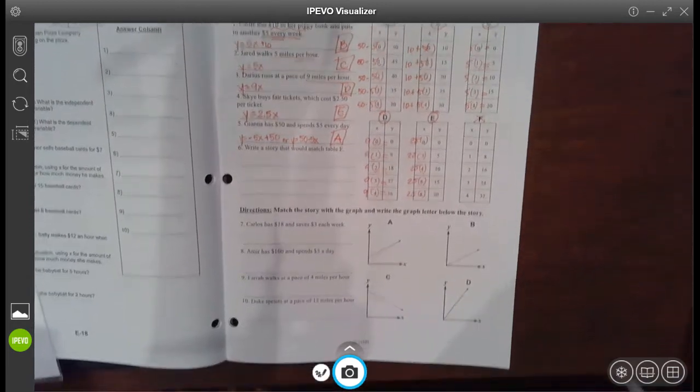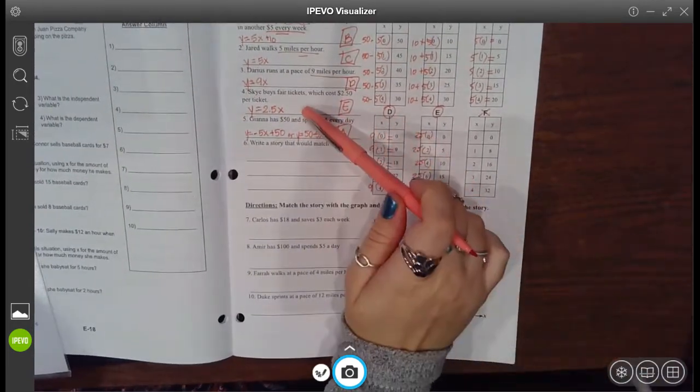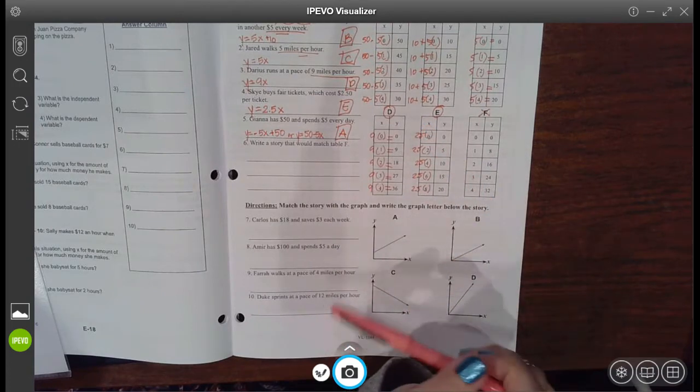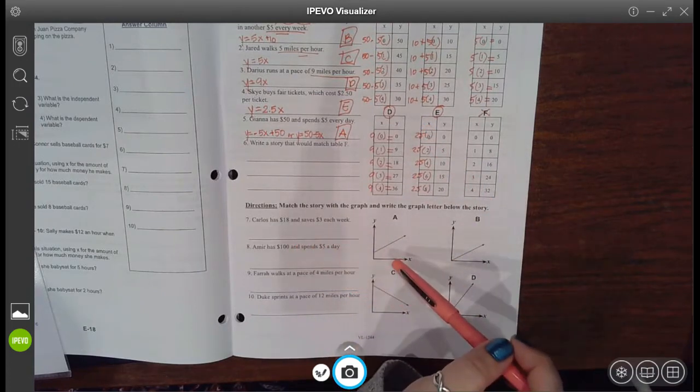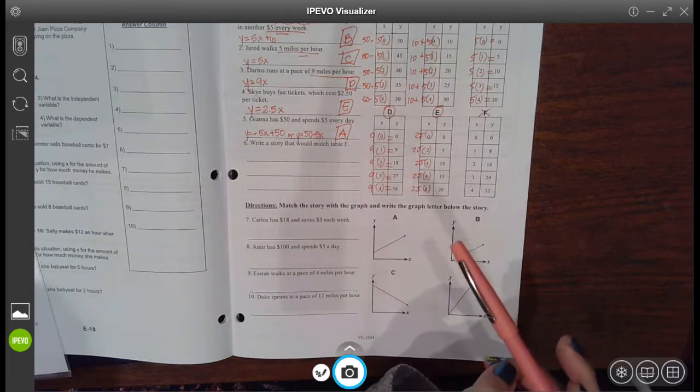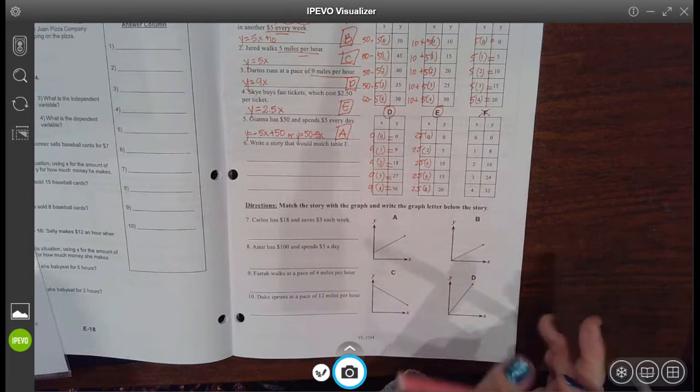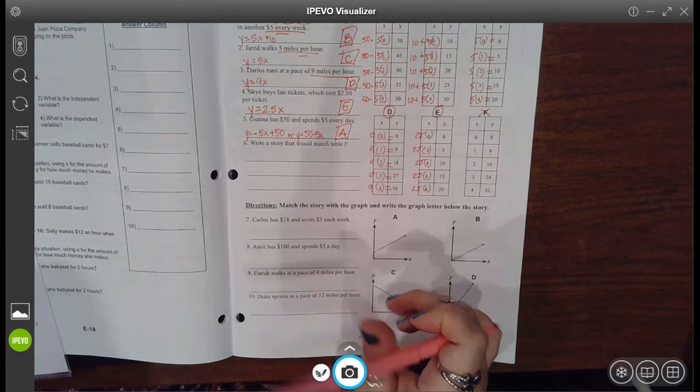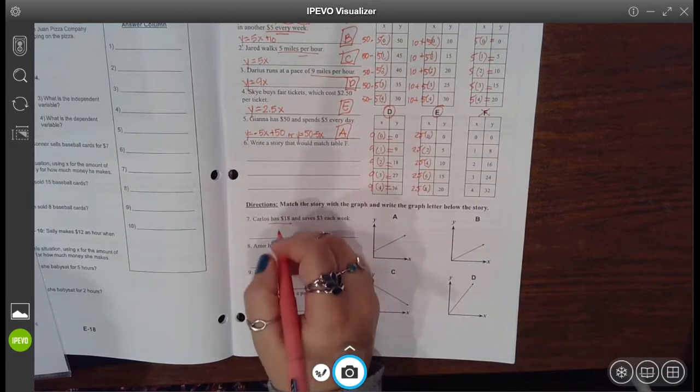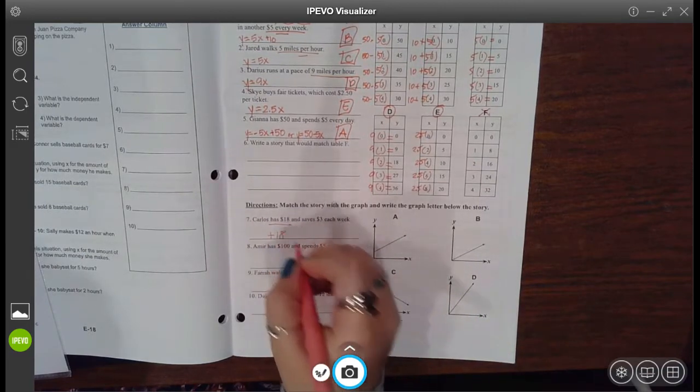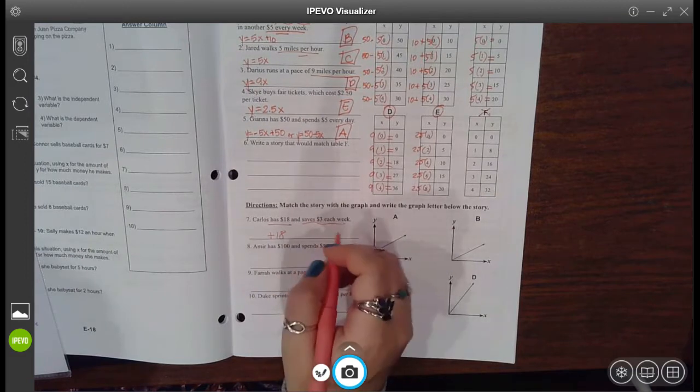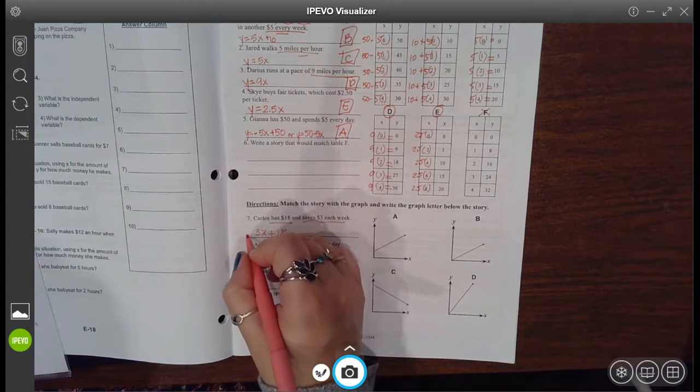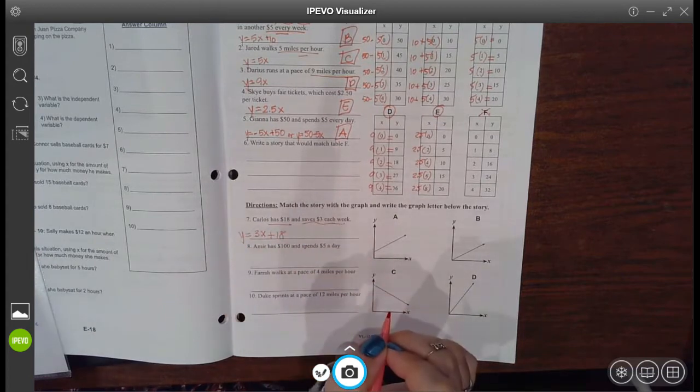Okay, now we practiced matching stories to tables. Now let's practice matching stories to graphs. Again, one of the easier things is to first of all write the equation from here. So it says that Carlos has 18, so he starts with 18. And then he saves an additional 3 per week. So 3 times the number of weeks plus 18 is equal to the total amount that Carlos has.